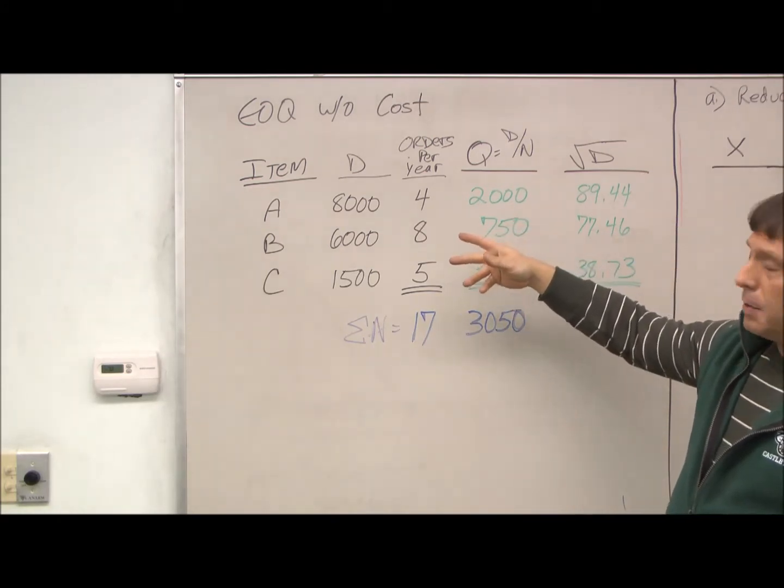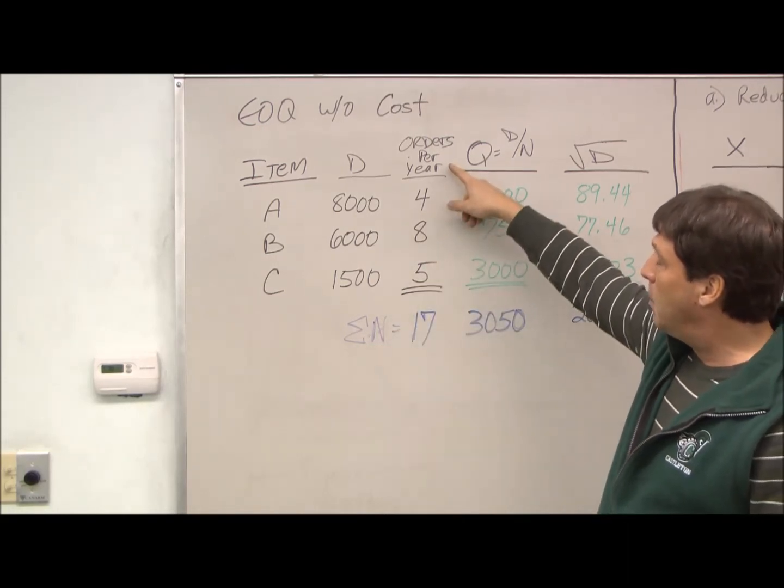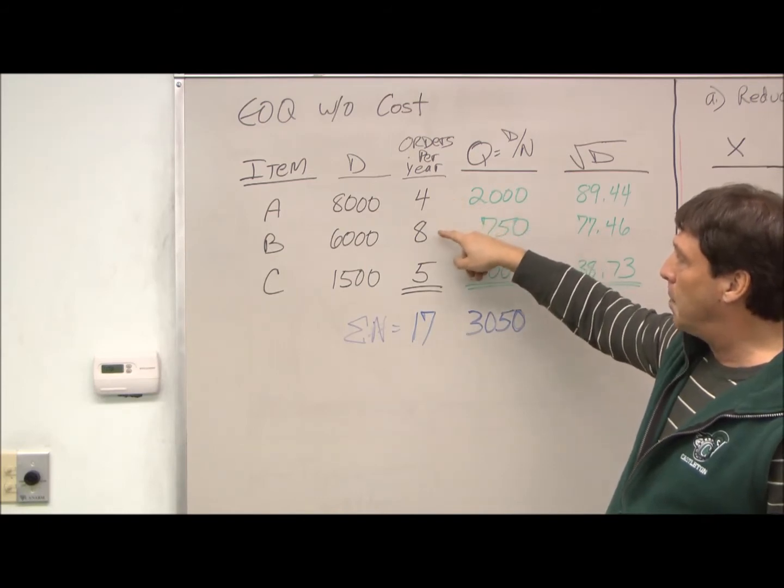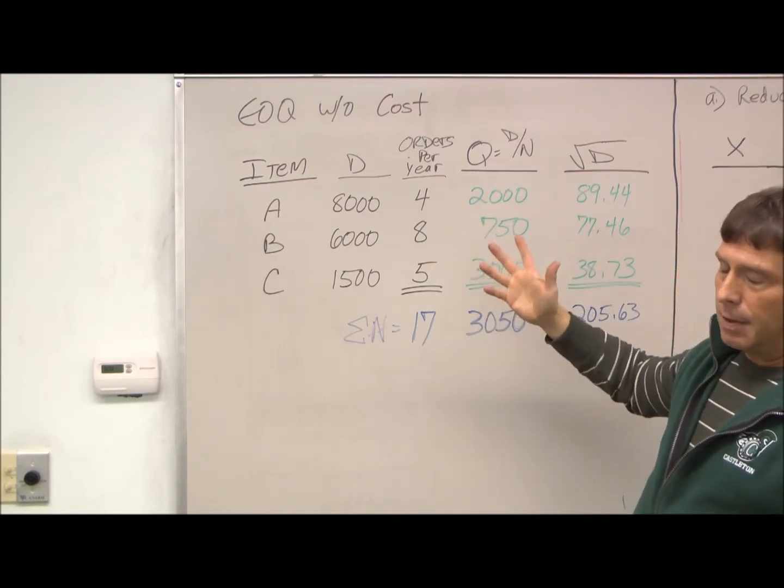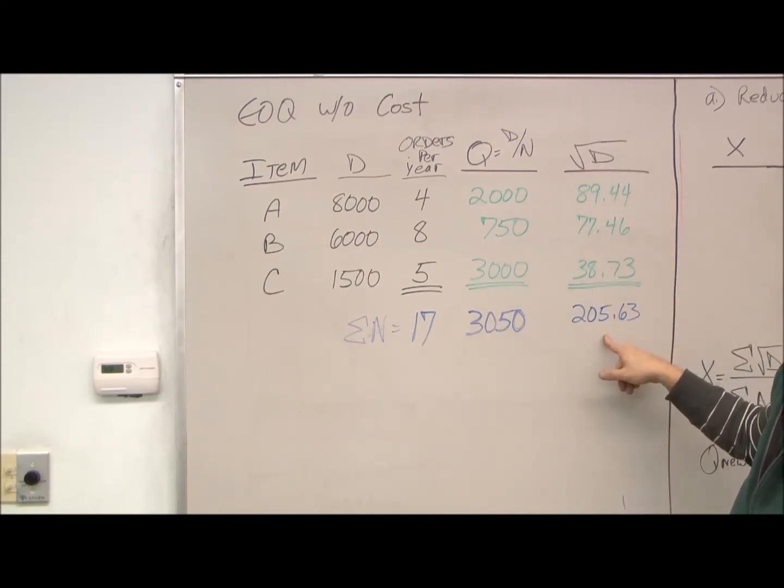From a lot of the equations we just looked at, we need the summation. So, the summation of N, or the number of orders per year, is 17. So, 4 plus 8 plus 5 equals 17. Take the summation of Q, the summation of square root of D.